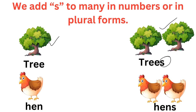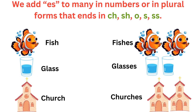Hen. How many hens are there? One hen — yahan pe one hen hai, so hen rahega. But here, how many hens are there? Two hens. To hen ke saath hum kya lagayenge? S lagayenge. We add ES to words in plural forms that end in CH, SH, O, S, or SS.